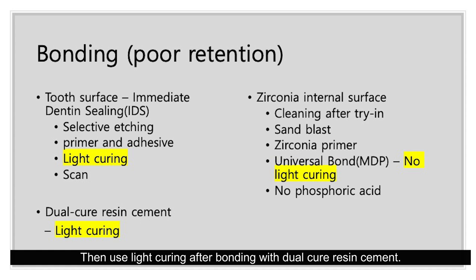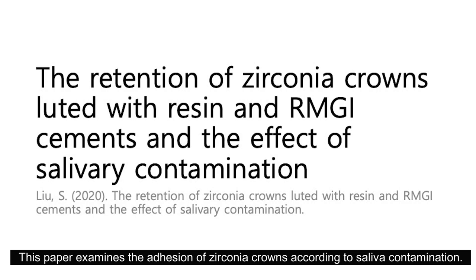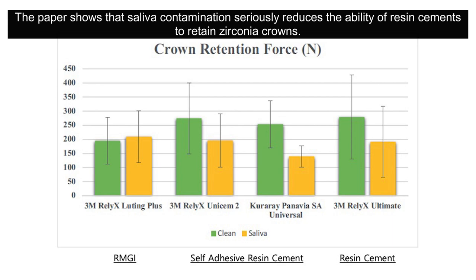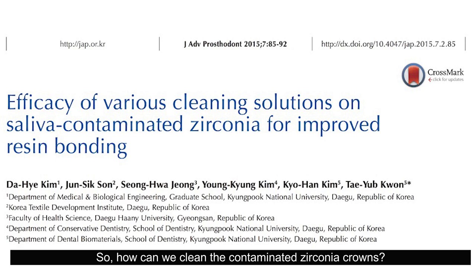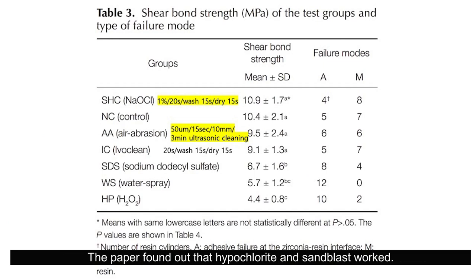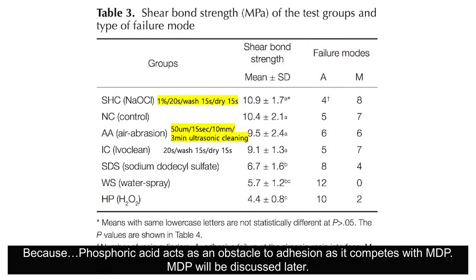Let's now talk more about cleaning. This paper examines the adhesion of zirconia crowns according to saliva contamination. It shows that saliva contamination seriously reduces the ability of resin cement to retain zirconia crowns — the yellow dots indicate crown retention force when zirconia crowns are contaminated with saliva. A study on efficient cleaning methods for saliva-contaminated zirconia crowns found that hypochlorite and sandblasting worked. However, phosphoric acid, which is effective in cleaning ceramics, is not an option for zirconia crowns because it competes with MDP, acting as an obstacle to adhesion.